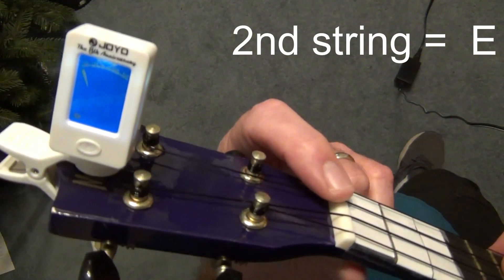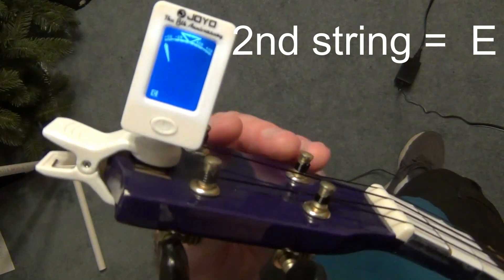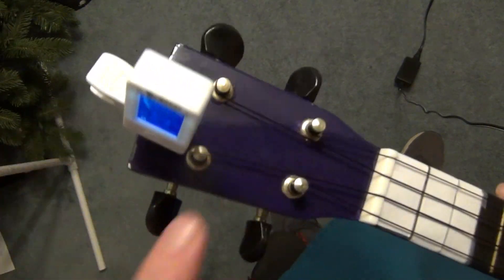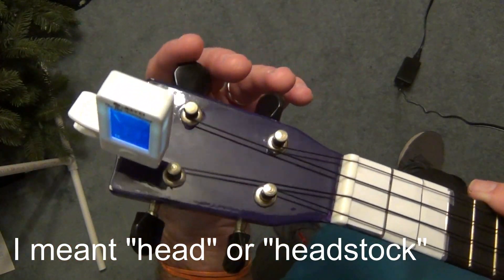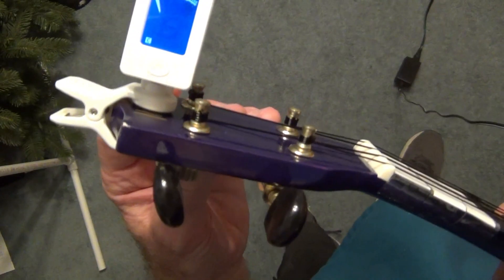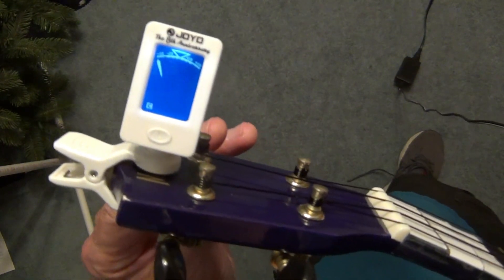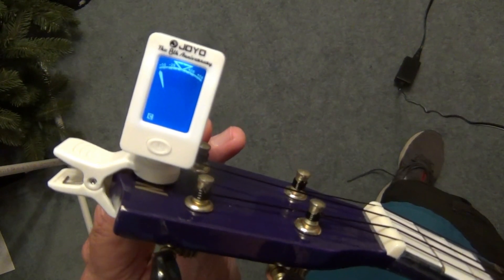So we go next to the second string which is an E note. Follow it to the right tuner. And because these are on the other side of the headstock they're wound opposite direction, so our way to tighten and loosen is going to be opposite direction of the other two strings that we just did. So I hit the string.